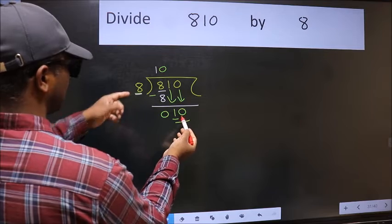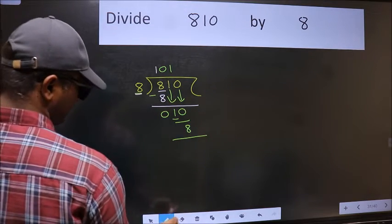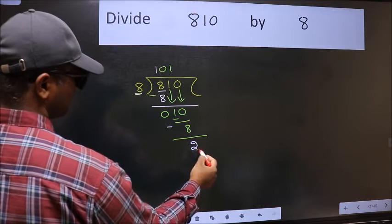A number close to 10 in the 8 table is 8 once 8. Now we should subtract. We get 2.